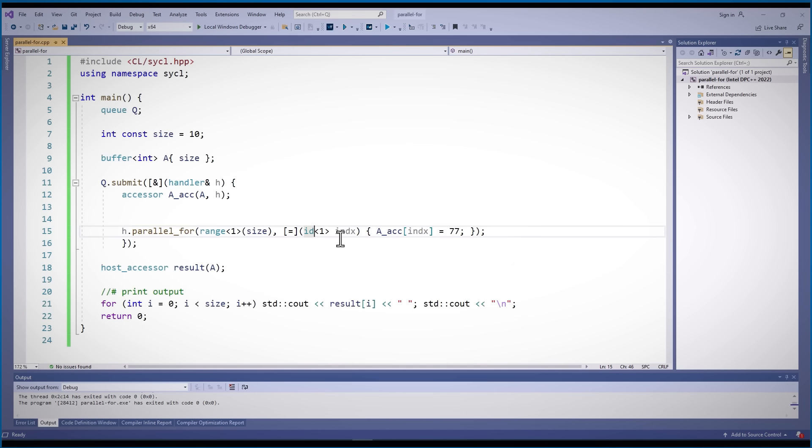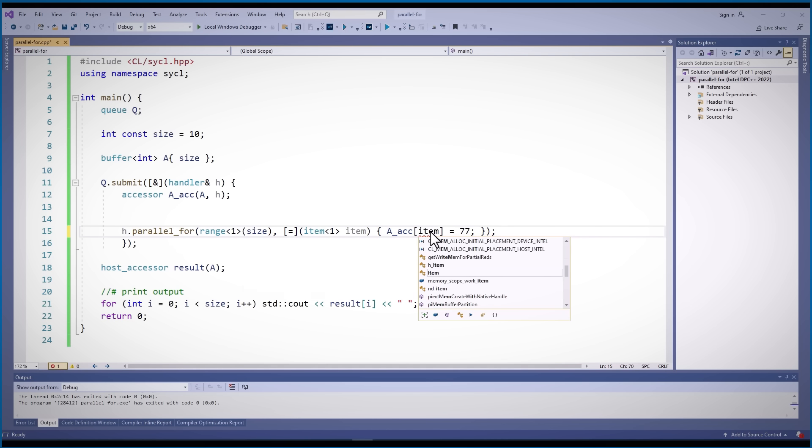If you need more information on the index, you can use the item class. And by that, you can get more information on each of the iterations of the kernel, each of the instances.